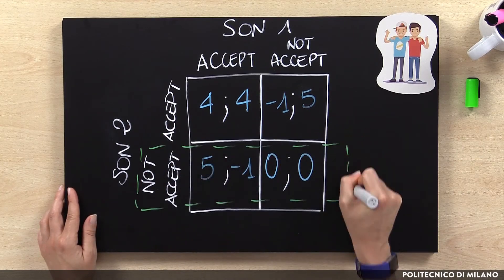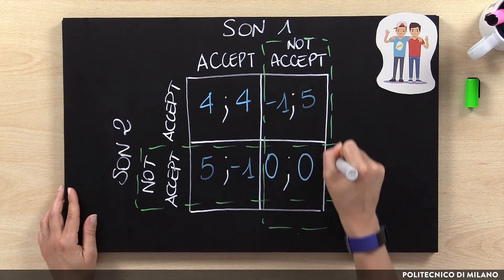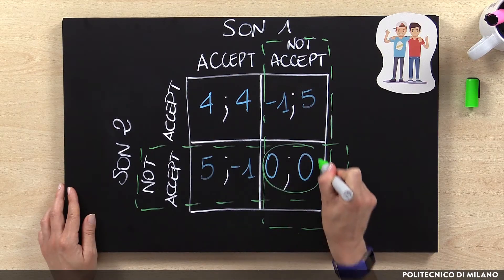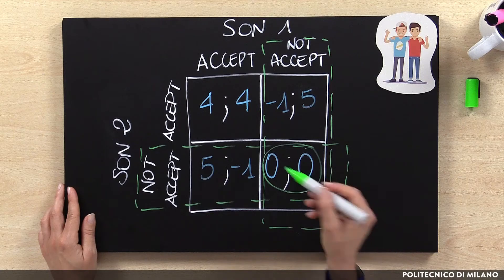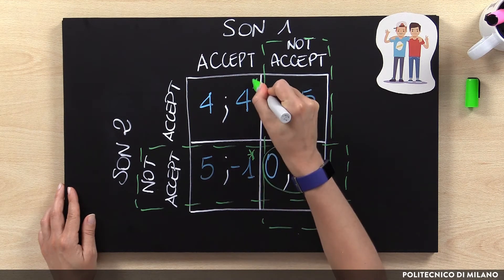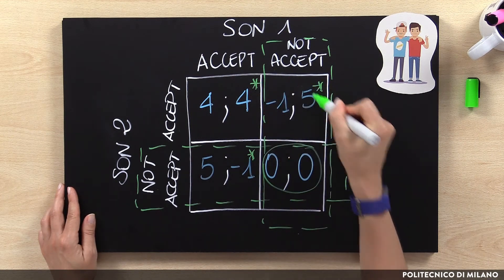In this case as well, not accepting is the dominant alternative for both brothers. As a matter of fact, not accepting for both sons is thereby also the Nash solution. But in this case we recognize the prisoner's dilemma, because the solution of the game is the only non-efficient solution — the worst alternative for the whole system.